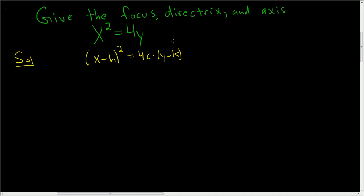This type of parabola either opens up or it opens down. In this case, it will open up because we have a positive 4. So you can see right away from our equation that h and k are both 0, so the vertex is (0, 0).